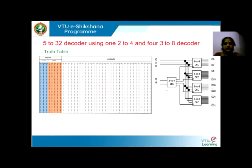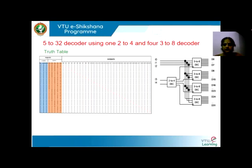On the same lines, we can design a 5-to-32 decoder using 3-to-8 decoders. However, we cannot use only two 3-to-8 decoders — we need more. Since a single 3-to-8 decoder can generate only 8 outputs, for 32 outputs we need 4 decoders. To select these 4 decoders, we need a selector circuit. What that selector circuit should be depends on the truth table.